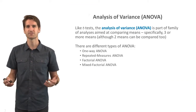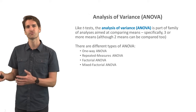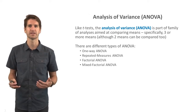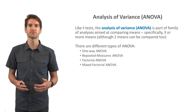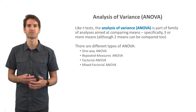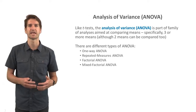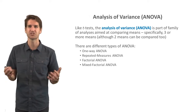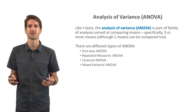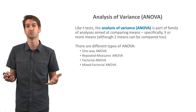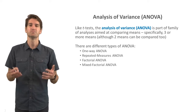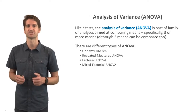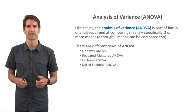An analysis of variance, or ANOVA for short, is like a t-test because it's designed to compare means. Specifically, ANOVA is part of a family of analyses aimed at comparing three or more means, although it can technically be used to compare two means. There are some interpretation reasons why we might decide not to do that, which I'll explain in a moment.